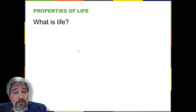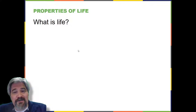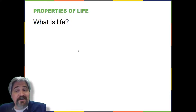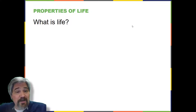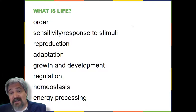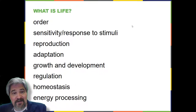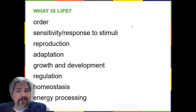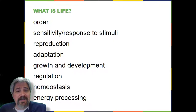All groups of living organisms share several key characteristics or functions: order, sensitivity or response to stimuli, reproduction, adaptation, growth and development, regulation, homeostasis, and energy processing. When viewed together, these eight characteristics serve to define life.